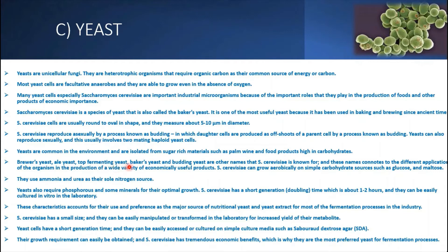Saccharomyces cerevisiae is known by different names depending on its application: brewer's yeast, ale yeast, top-fermenting yeast, baker's yeast, and budding yeast. It can grow aerobically on simple carbohydrate sources such as glucose and maltose. Yeast cells use ammonia and urea as their nitrogen source and require phosphorus and some minerals for optimal growth. They have a very short generation time, with a doubling time of one to two hours, making them easy to culture in vitro. These characteristics account for their preference as a major source of nutritional yeast and yeast extract in most fermentation processes in industry.